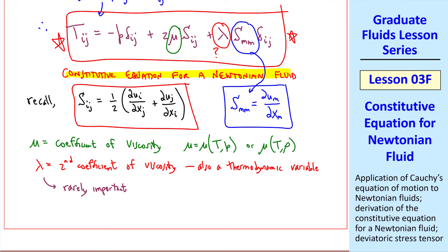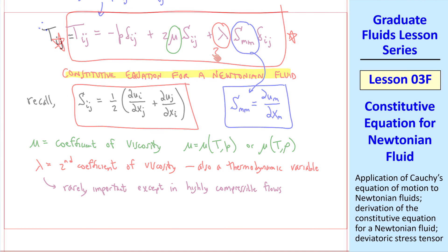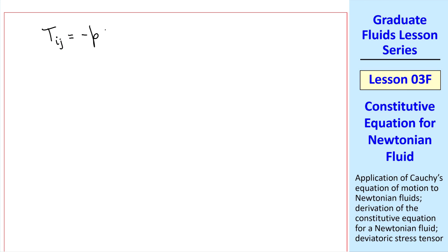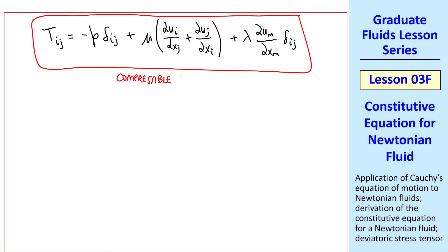Fortunately, lambda is rarely important, except in highly compressible flows. Plugging these equations for s into our constitutive equation, we can write tij equal negative p delta ij plus mu del ui del xj plus del uj del xi plus lambda del u m del xm delta ij. This is the compressible stress tensor for a Newtonian fluid.